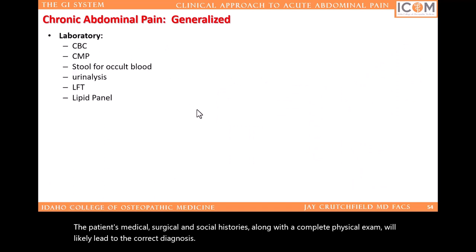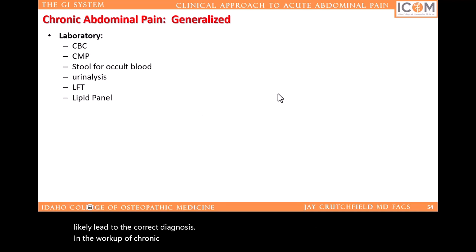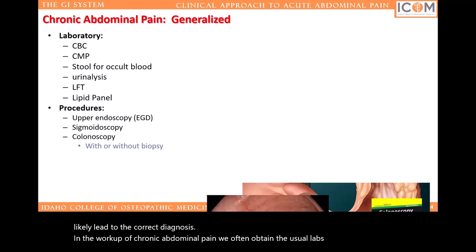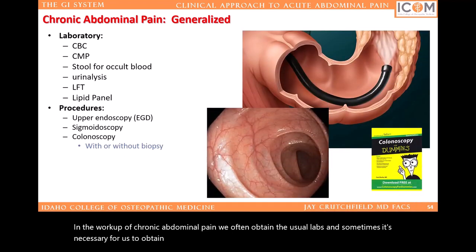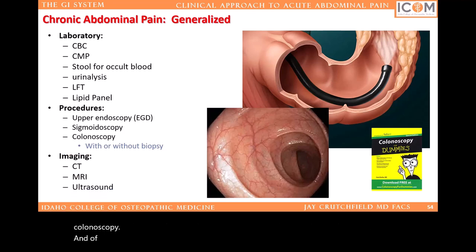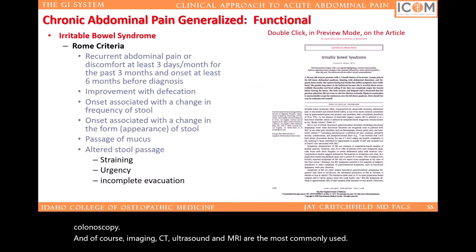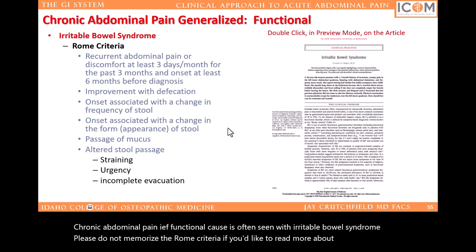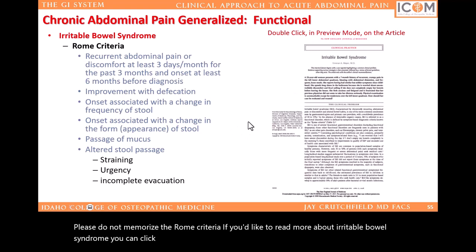An acute exacerbation of a chronic condition is quite real. The patient's medical, surgical, and social histories, along with a complete physical exam, will likely lead to the correct diagnoses. In the workup of chronic abdominal pain, we often obtain the usual labs. Sometimes it's necessary to obtain upper and lower endoscopies, such as a sigmoidoscopy or colonoscopy. CT, ultrasound, and MRI are the most commonly used imaging modalities. If you'd like to read more about irritable bowel syndrome, please check out the article at the provided link. Please don't memorize these Rome criteria — they're here just as a review.